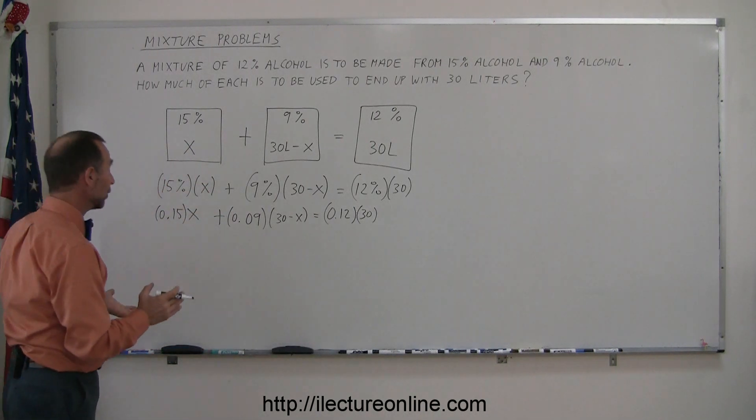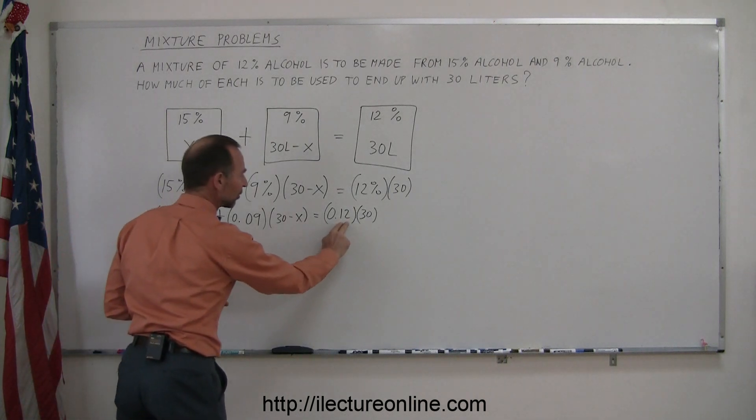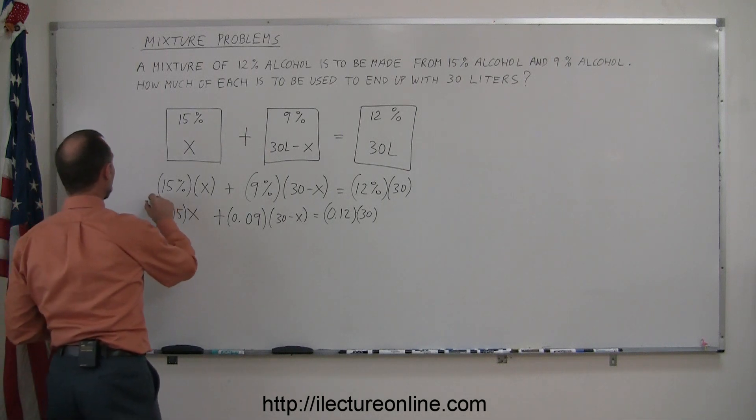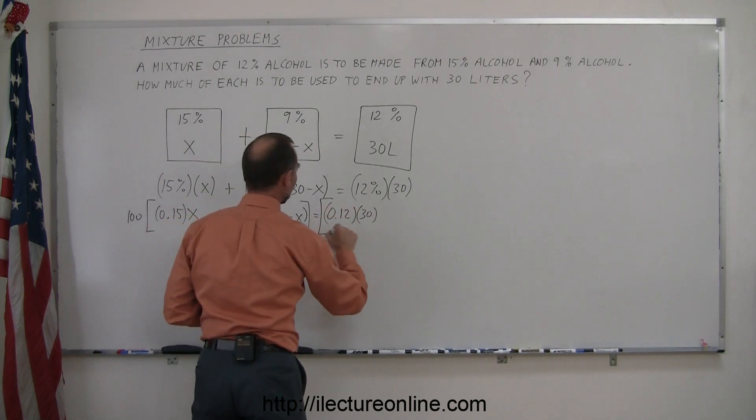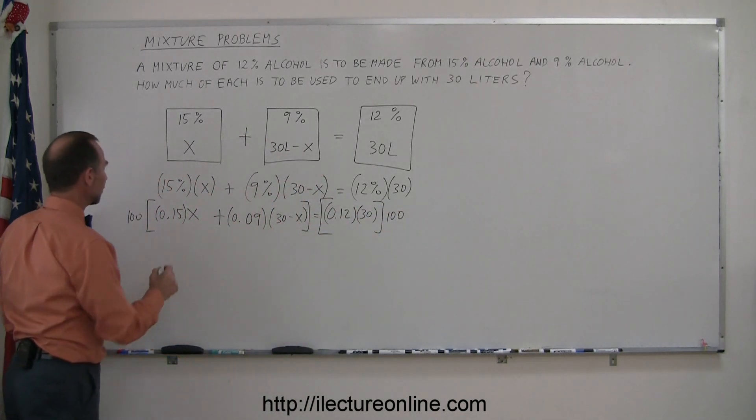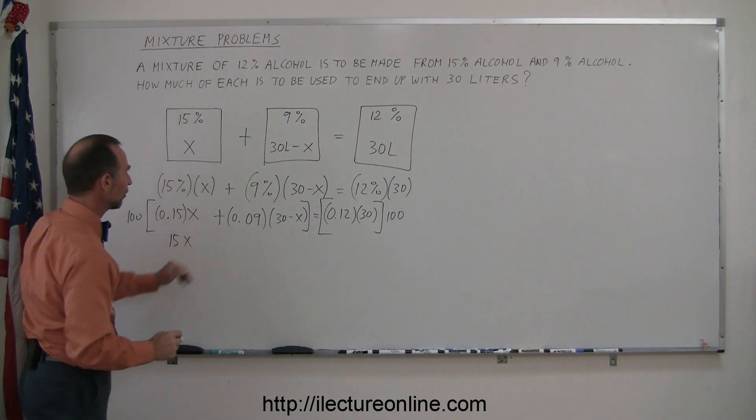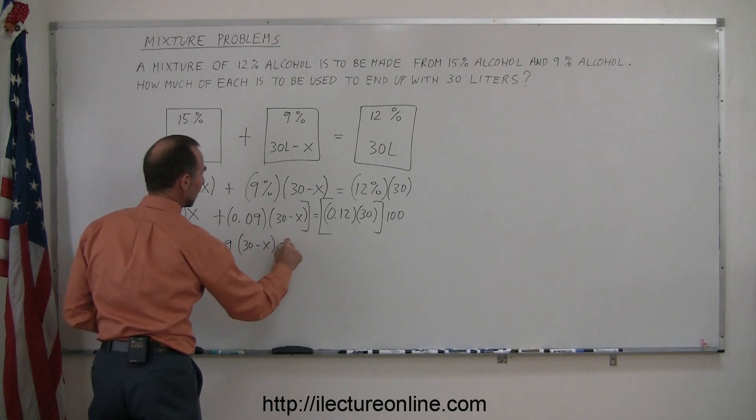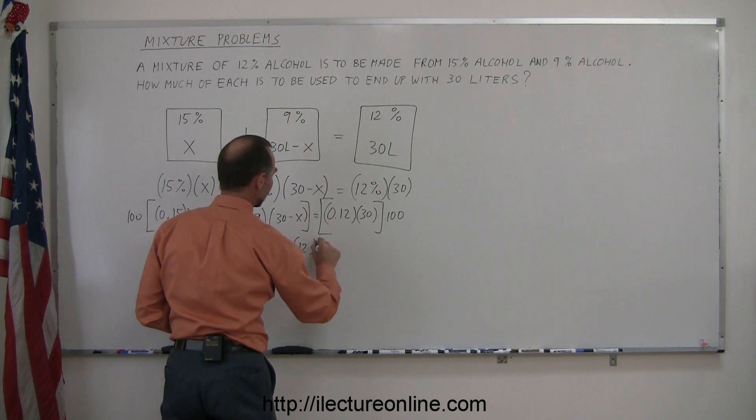The next thing we want to do is get rid of the decimals. We have two decimal places here, two decimal places here, two decimal places there. So by multiplying each side of the equation by 100, we can get rid of these decimal places. So multiply this times 100, multiply this times 100. So 100 times this gives me 15, so this becomes 15X. 100 times this gives me 9, so plus 9 times 30 minus X equals 100 times this. That becomes 12 times 30.